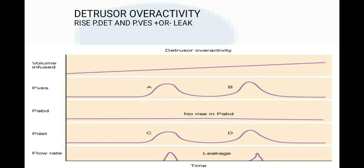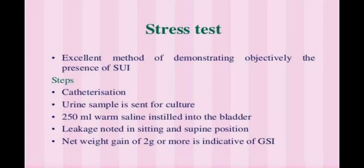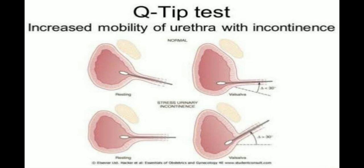In detrusor overactivity, when volume is infused the vesical pressure increases and detrusor pressure increases without a corresponding rise in abdominal pressure, and leakage occurs with the rise in detrusor pressure. The pad test is an excellent method of objectively demonstrating stress urinary incontinence: the bladder is catheterized, urine sent for culture, 250 ml of warm saline is instilled, and leakage is noted in sitting and supine positions — a net weight gain of two grams or more is indicative of genuine stress incontinence. The Q-tip test demonstrates increased urethral mobility with incontinence.